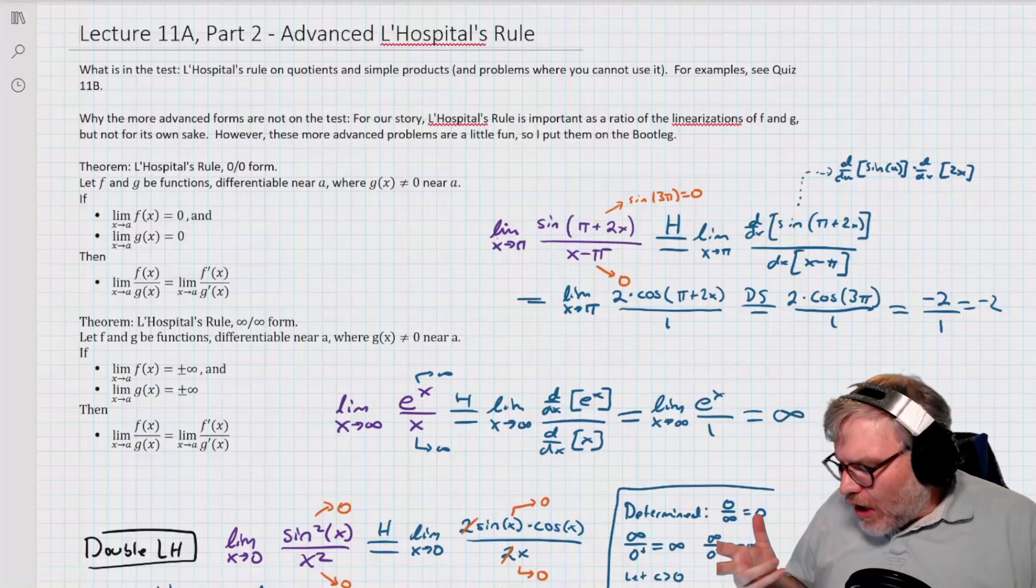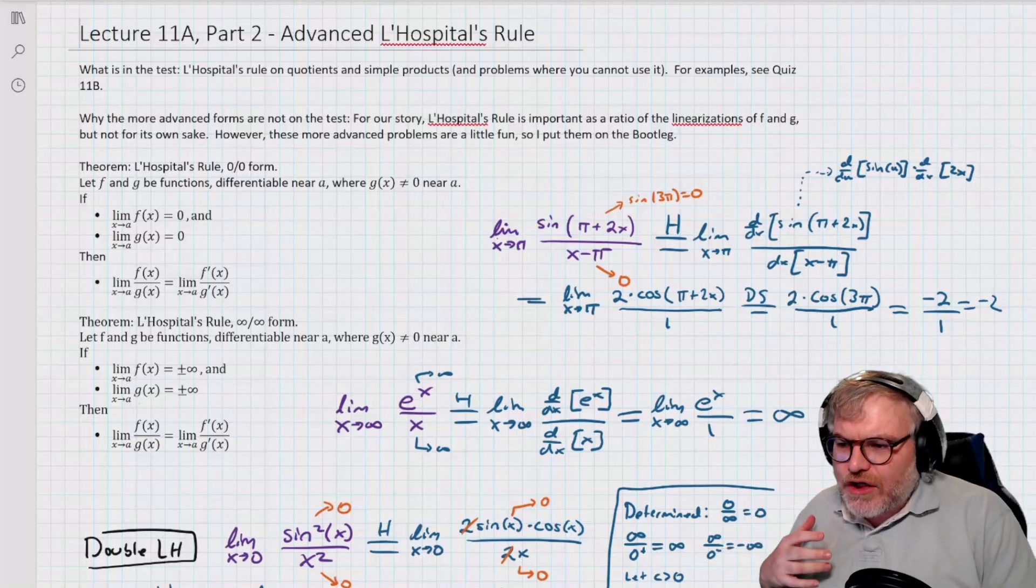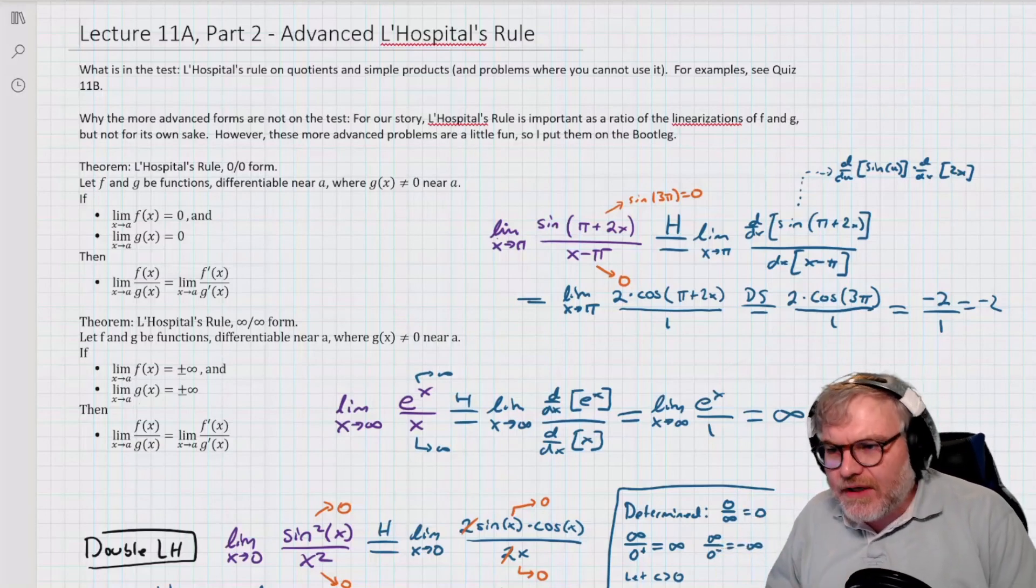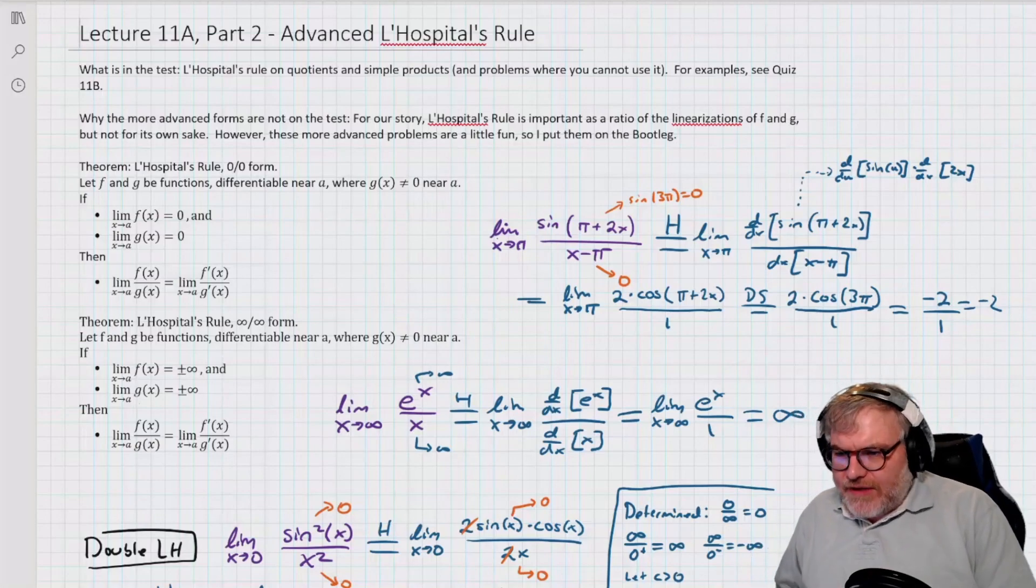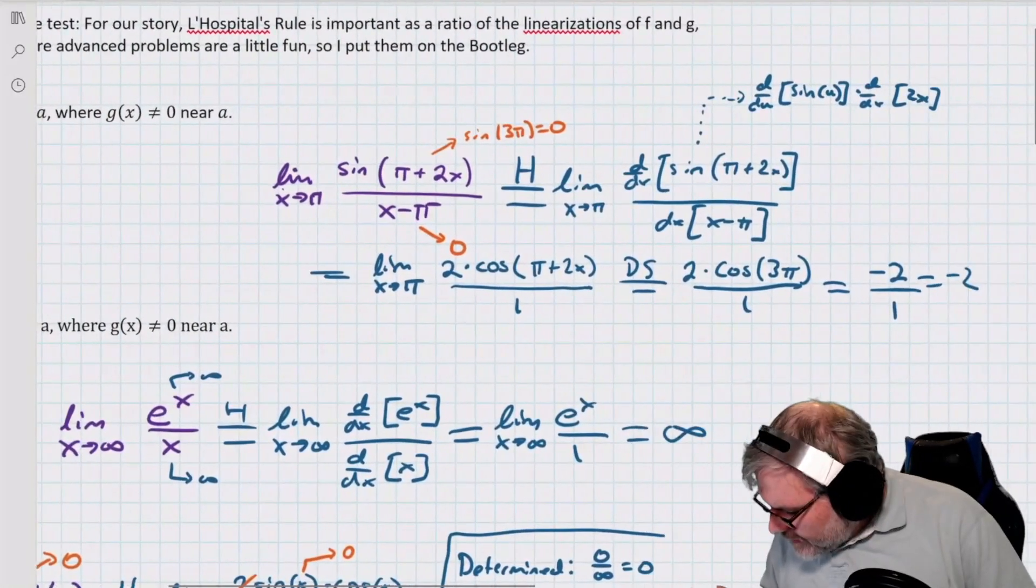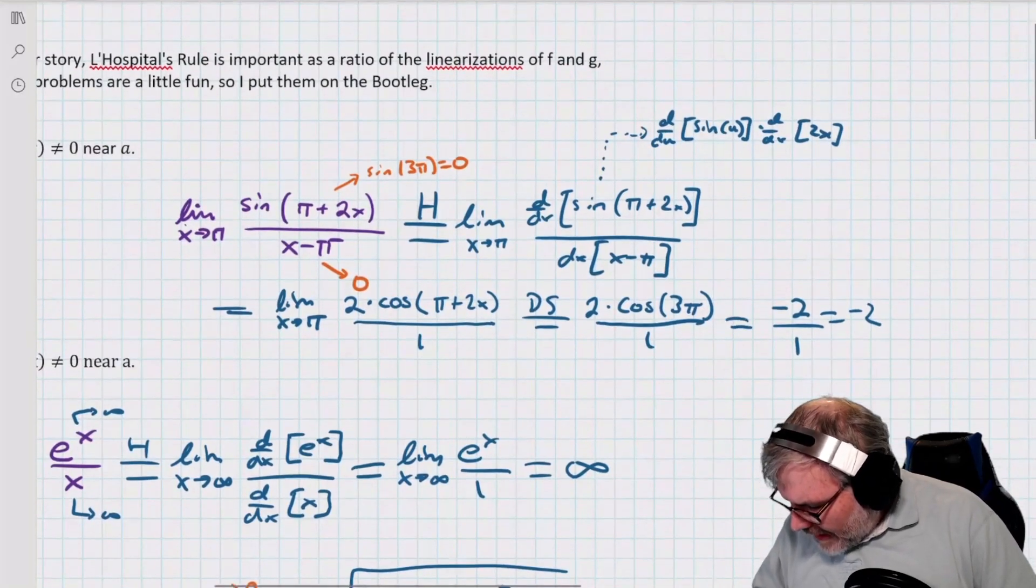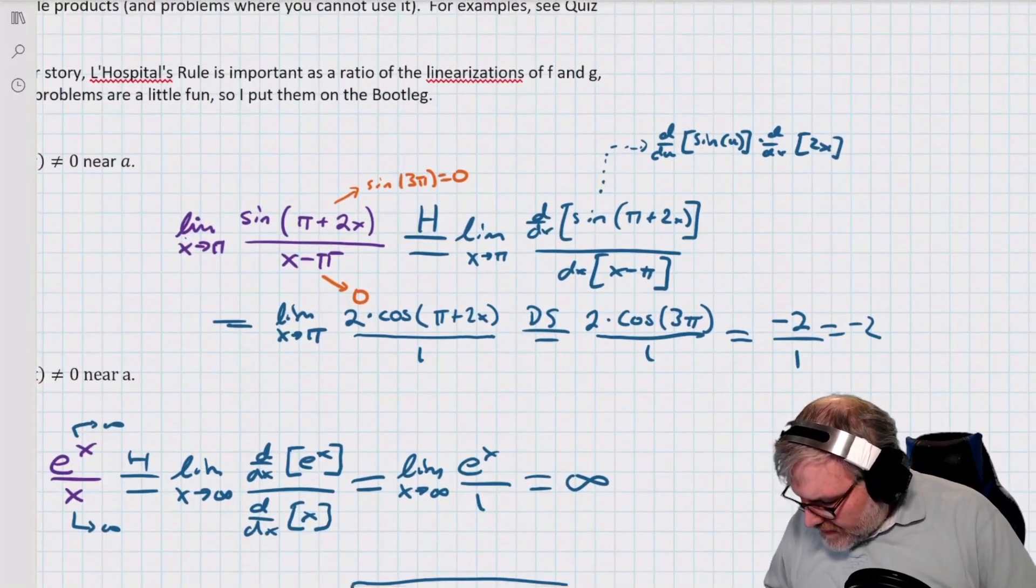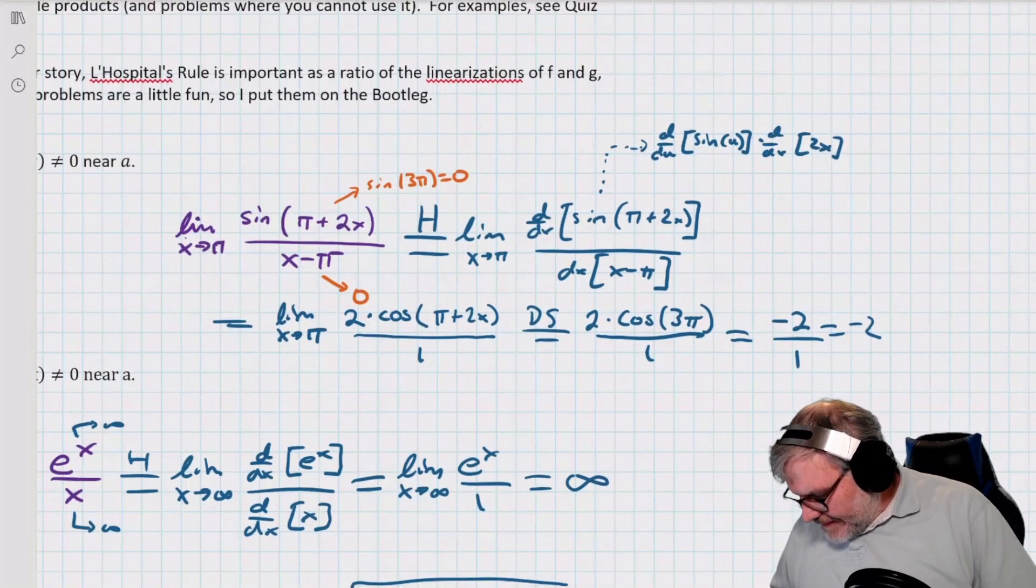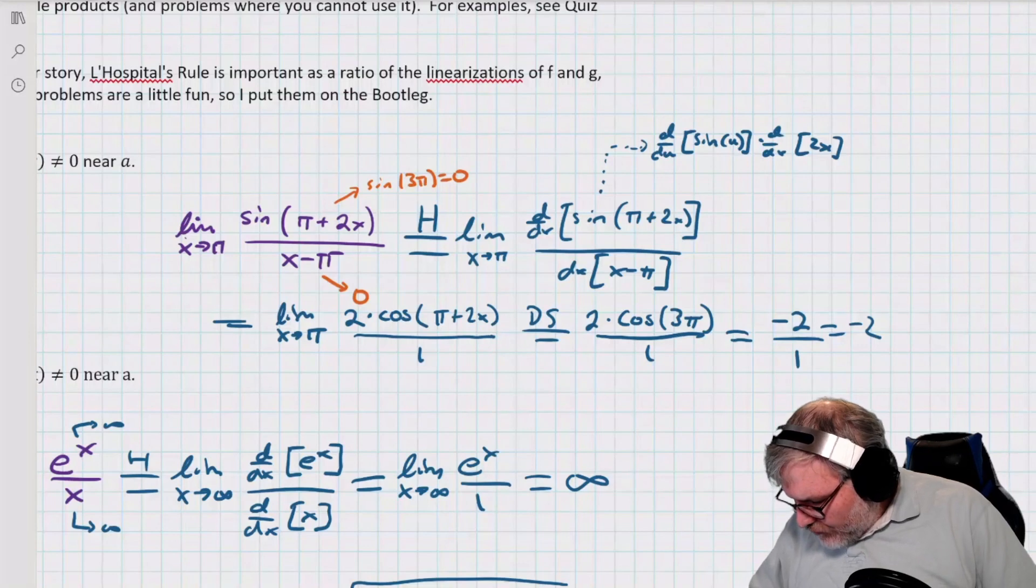So we've already gone over the quotient forms of L'Hopital's Rule. These are the 0 over 0, infinity over infinity. So these are things like, I've got sine of pi plus 2x over x minus pi. I'll get sine of 3 pi, which is 0. I get 0 over 0.